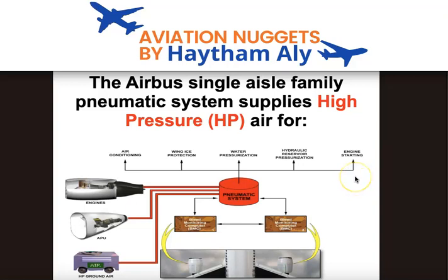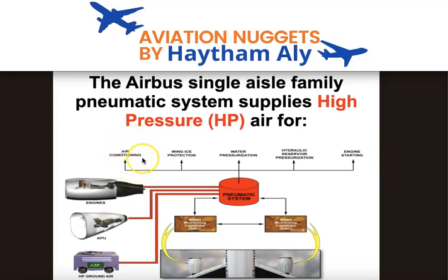What is the function of the pneumatic system? The function of the pneumatic system is to regulate air coming from the engine in terms of pressure and temperature before supplying these users: air conditioning, wing ice protection, water tank pressurization, hydraulic reservoir pressurization, and engine starting.